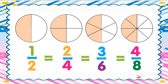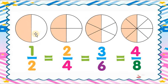Key formula: in any shape, first check how many parts are there in total — write that in the denominator. Then write the shaded parts in the numerator. That is our method and process.